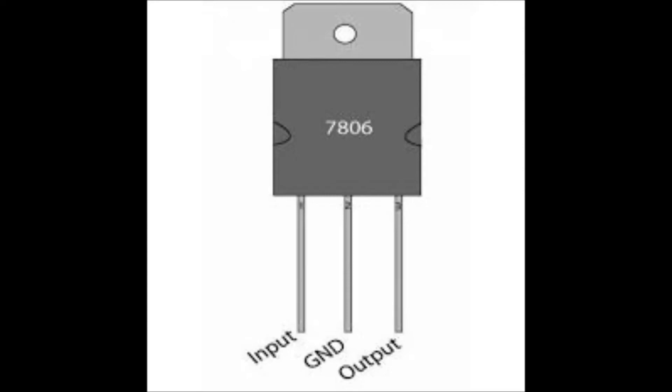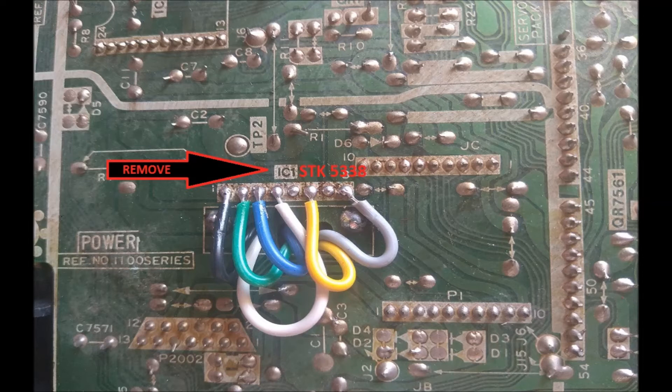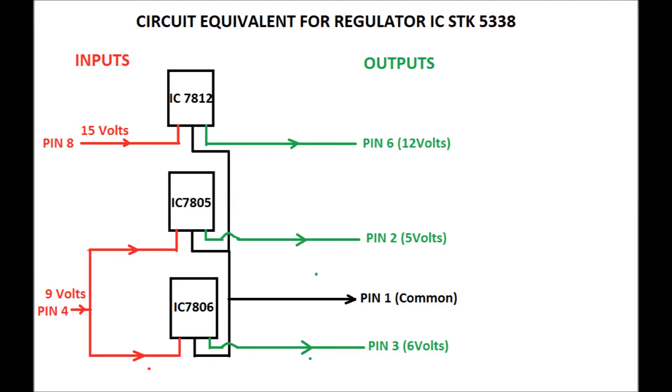First remove the defective STK 5338 IC and use the same heat sink for mounting all three ICs: 7812, 7805, and 7806. All the center pins of the ICs are connected together and soldered at pin number 1.